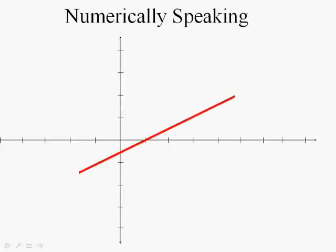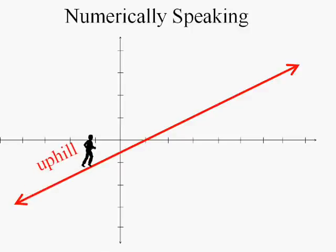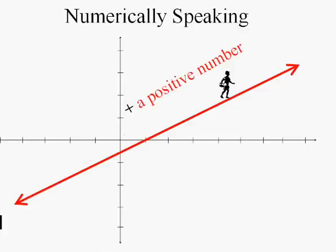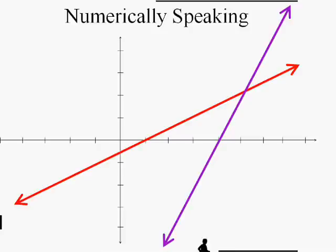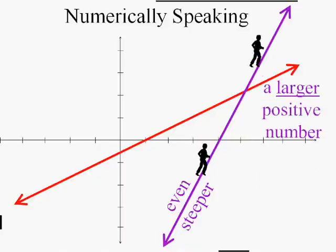Numerically speaking, if you looked at this line and tried to walk on it, of course it would be uphill and it would be a positive slope. This one would also be a positive slope but it would be even steeper, so that would be a larger positive number if we tried to measure its slope, its leaniness.